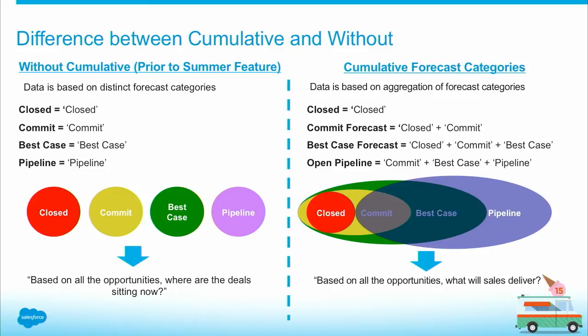You can see I drew bubbles to illustrate the distinctions of these categories separately within a forecast tab. This is a good use case to ask, based on all your opportunities, where are deals sitting? So if a sales team's forecast process is based on this, you probably don't want this feature on. But I know a lot of companies, when they forecast numbers, it's more based on cumulative forecast categories — data based on aggregation of forecast categories. You can see these defined definitions if you enable this preference.